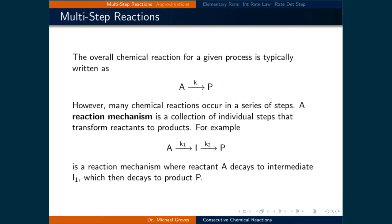The overall chemical reaction for a given process is typically written as some set of reactants, denoted here as A, which produces some set of products, P. However many chemical reactions occur in a series of steps. A reaction mechanism is a collection of individual steps that transforms reactants to products.